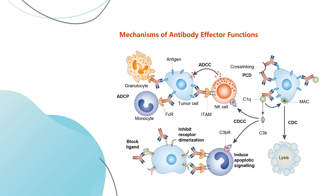ADCC is induced when FC-gamma receptors on innate effector cells are engaged by the antibody's FC domain that is bound to viral proteins on the surface of virus-infected cells. This interaction induces the release of cytotoxic factors, resulting in the killing of infected cells. ADCP is the uptake of antigen-antibody complexes by phagocytic cells, including monocytes, macrophages, neutrophils, eosinophils, and dendritic cells, which express FC-gamma receptors. ADCP results in the clearance of immune complexes from the infected host by trafficking complexes to lysosomes for degradation, and antigen processing for presentation on MHC molecules on the cell surface.